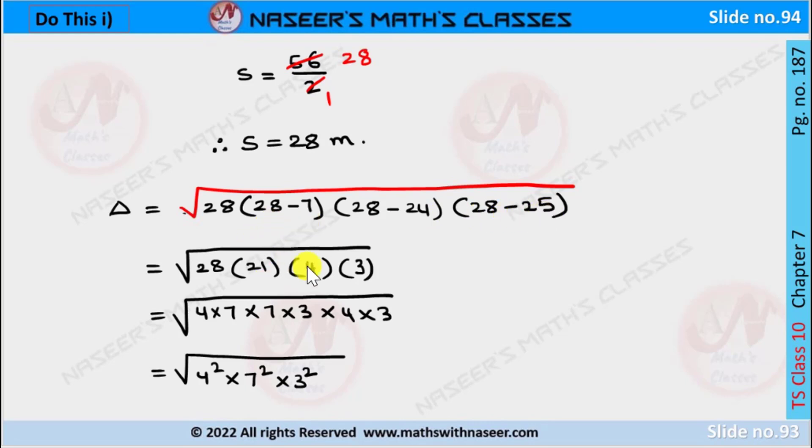Here 28 minus 7 is 21, 28 minus 24 is 4, and 28 minus 25 is 3. Now 28 is written as 4×7, 21 is written as 7×3, and we have 4 and 3.